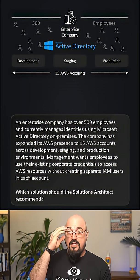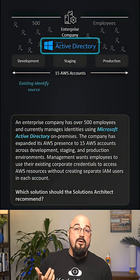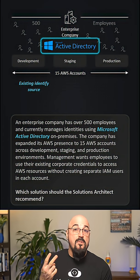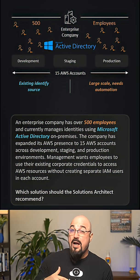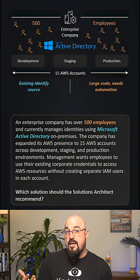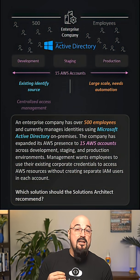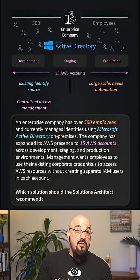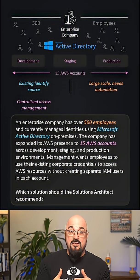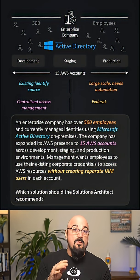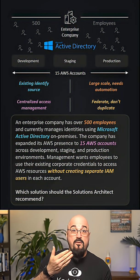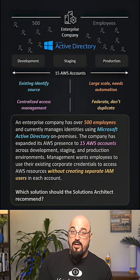Let's identify the key hints. One, Microsoft Active Directory — this is an existing identity source. Two, 500 plus employees, so large scale needs automation. Three, 15 AWS accounts, so we need to centralize access management. Number four, no separate IAM users, so we need to federate, not duplicate.